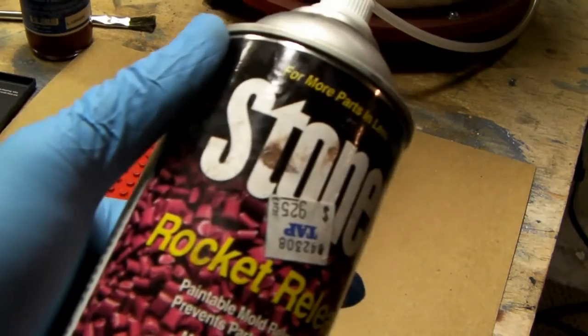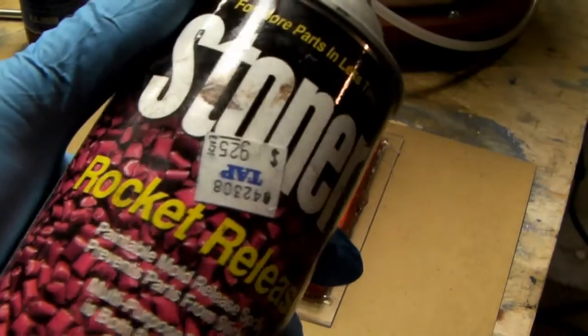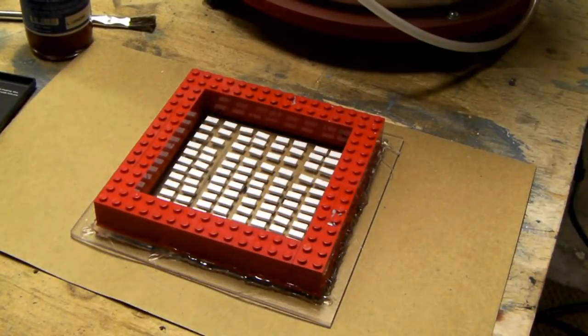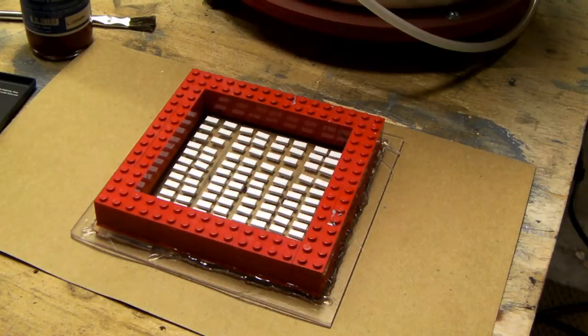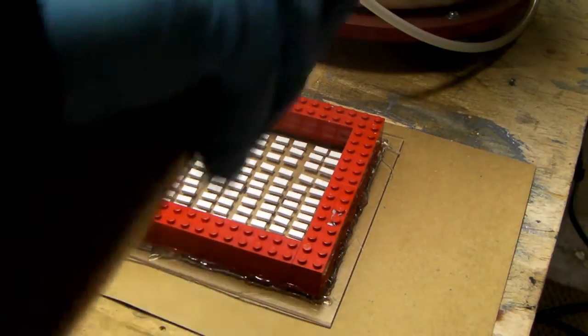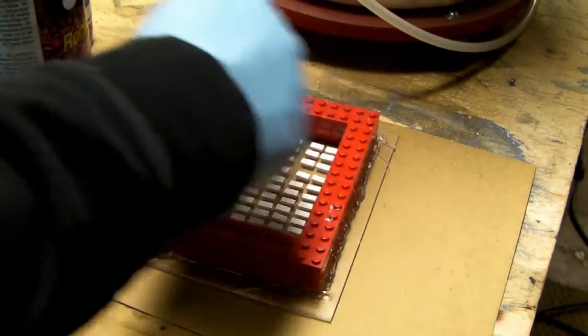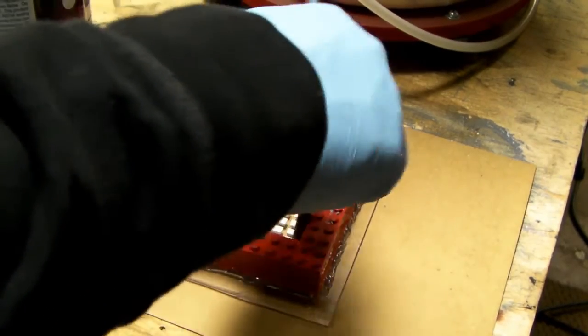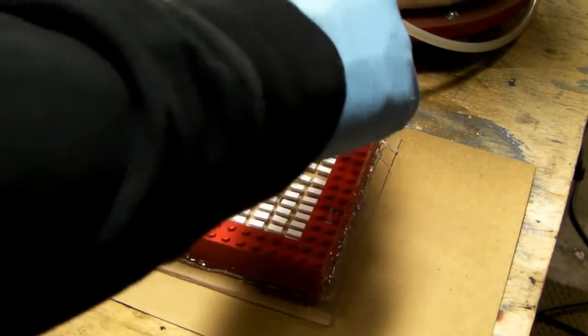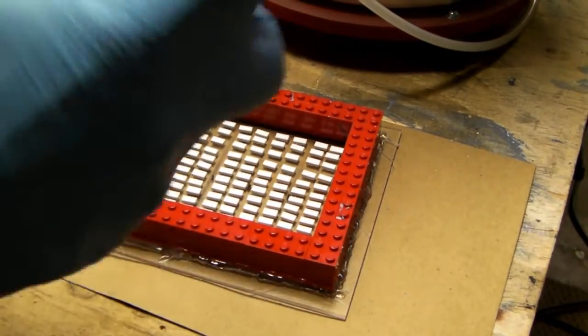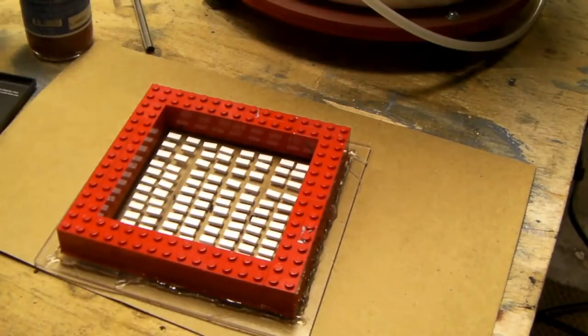We're gonna prep the mold first so the silicone doesn't stick in it. This is Stoner Pocket Rocket Release. Got this at TAP Plastics, a local plastic supply store in the Sacramento area. I'm gonna give it a quick spray and then go in there with this brush to get in these grooves, then spray again so we have as few problems as possible.